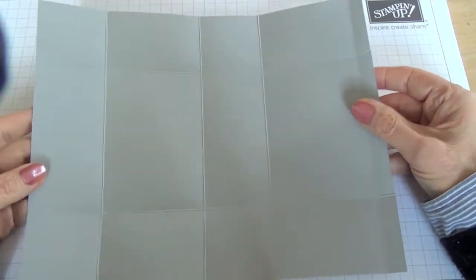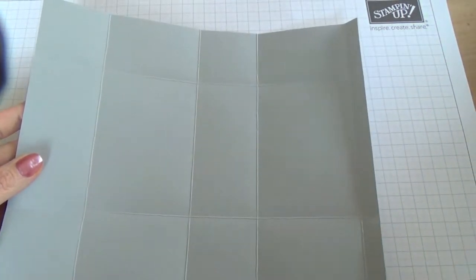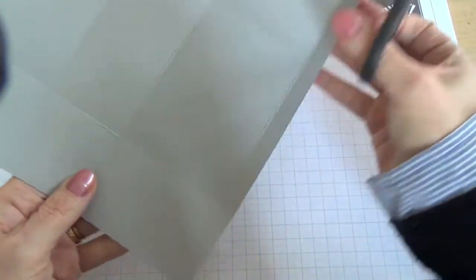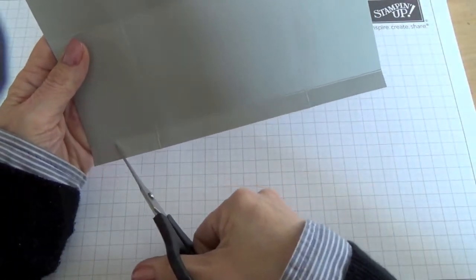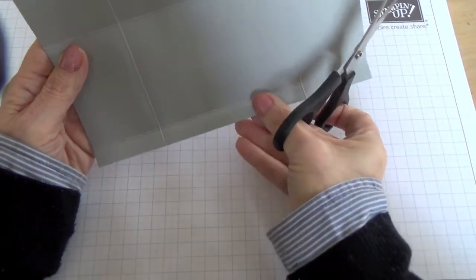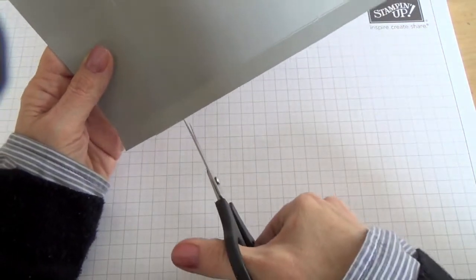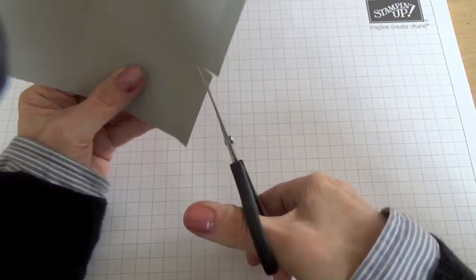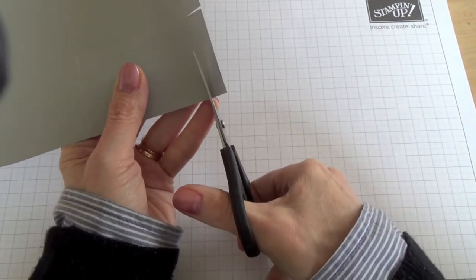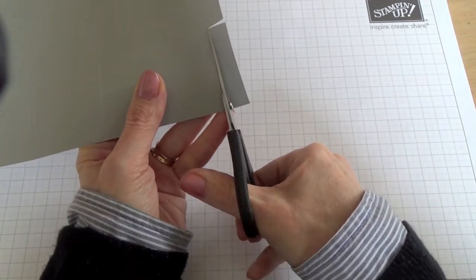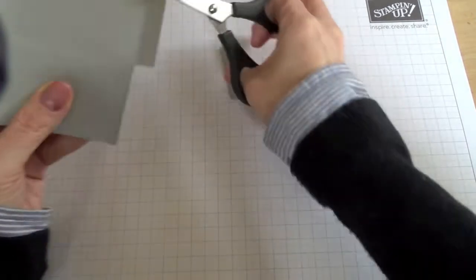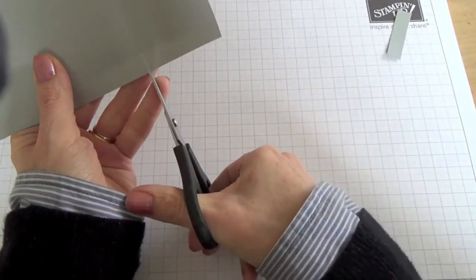Here's my nicely folded cardstock. We're going to take a pair of paper snips and where you've got a little edge, we're going to cut these little corners away completely. And the same with the other one.